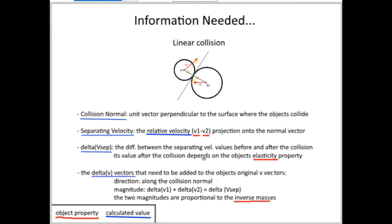The value of the separating velocity will get multiplied by minus 1 times elasticity after the collision, and I need to take the difference between the separating velocity's value before and after the collision. This amount of the difference will need to be distributed between the two objects proportional to their inverse masses, for which I divide it by the sum of the inverse masses — that's how I get the impulse magnitude. Then multiplying the normal unit vector by this impulse gives the impulse vector, and the change of velocity for individual objects is the impulse vector multiplied by each object's inverse mass.